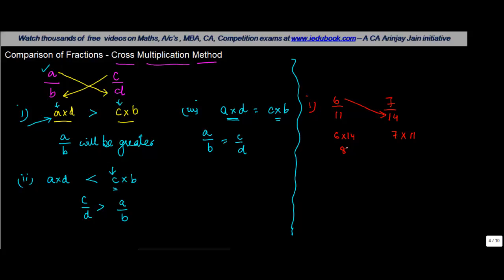6 into 14 is 84, 7 into 11 is 77, 84 is greater than 77. In so far as 84 is concerned, the numerator which was there was 6 which is in the first fraction. Hence, 6 upon 11 is greater than 7 upon 14.